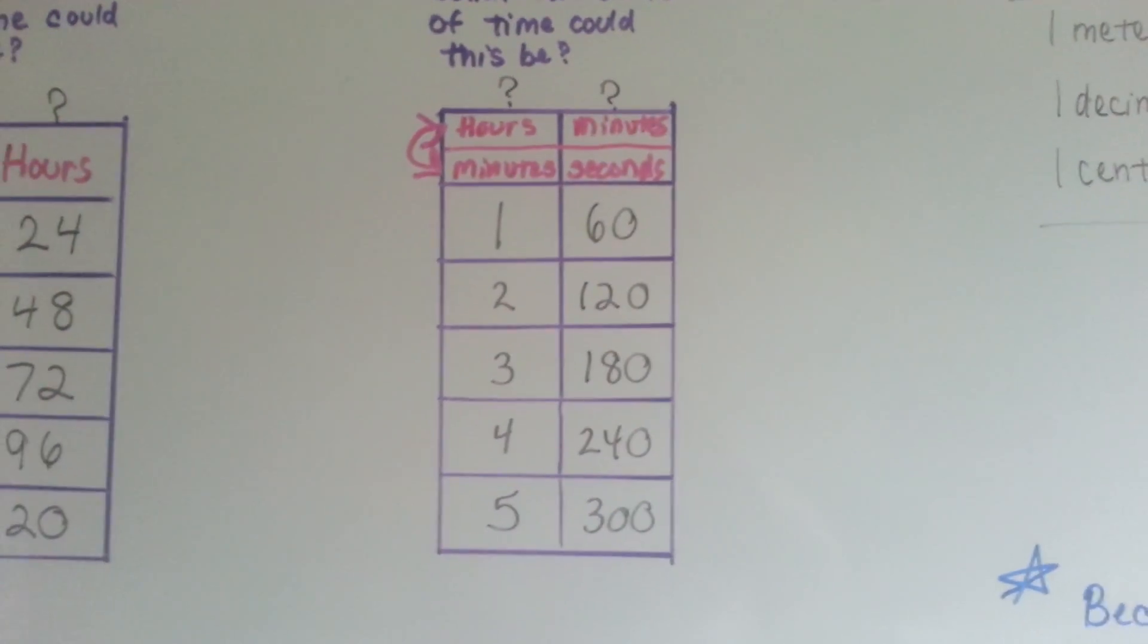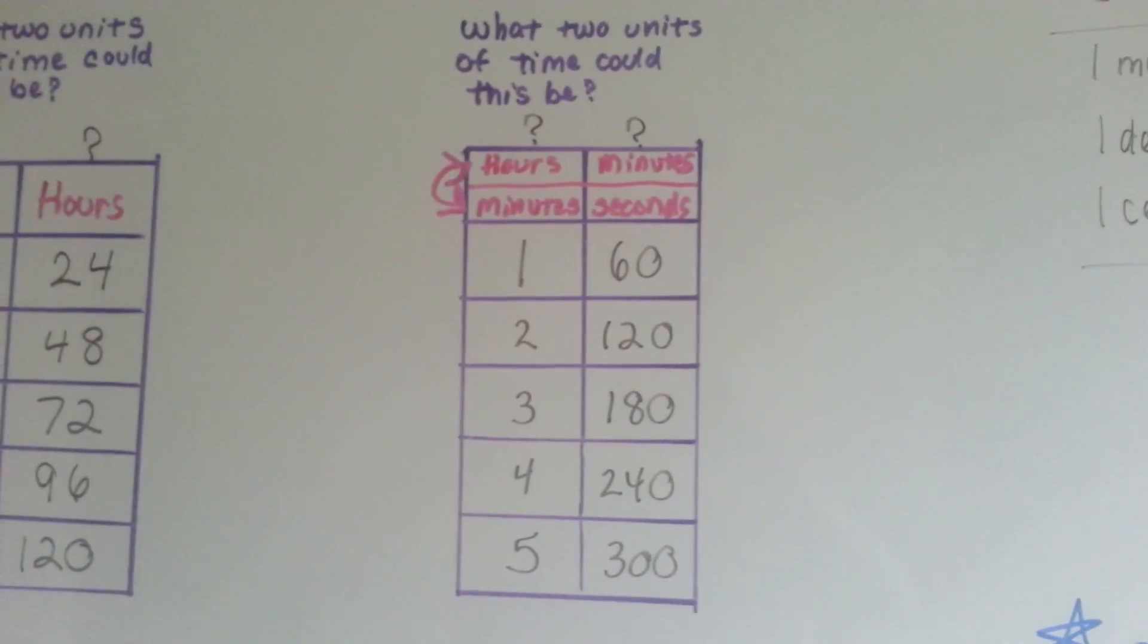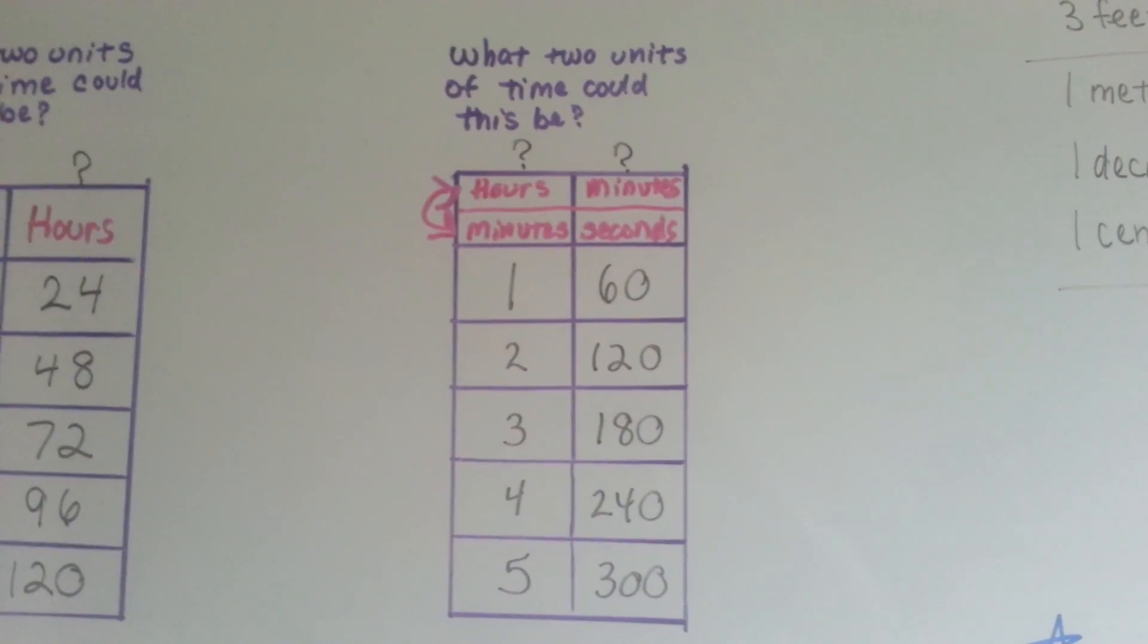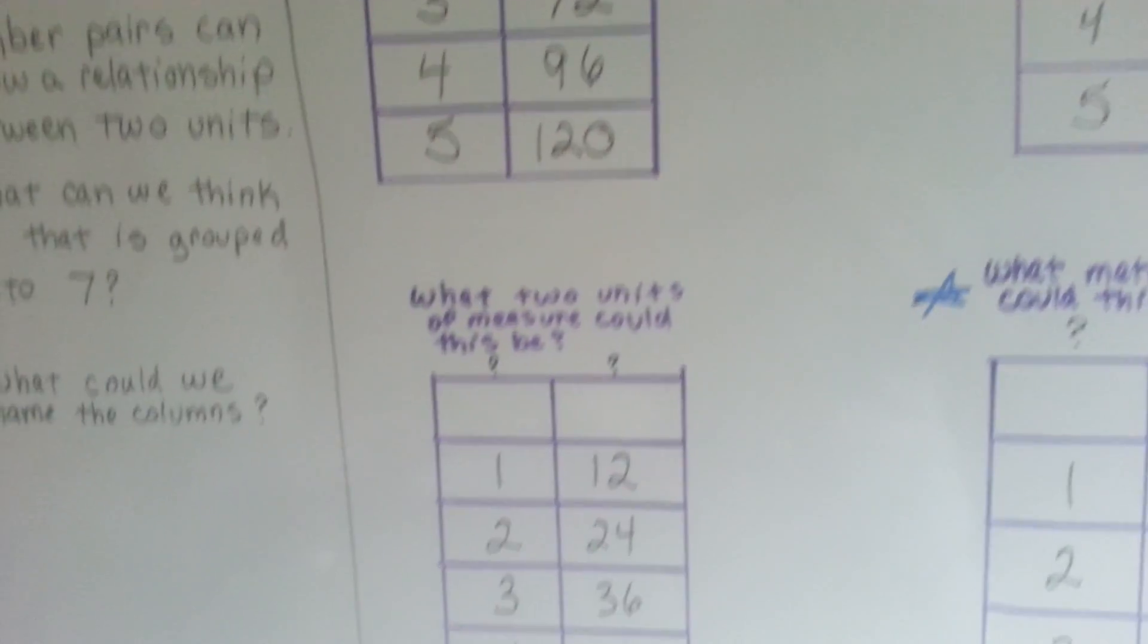Because one minute is 60 seconds. So it could have been either one of those increments. Alright. Well, what about two units of measure?